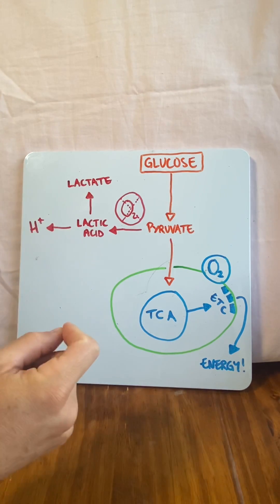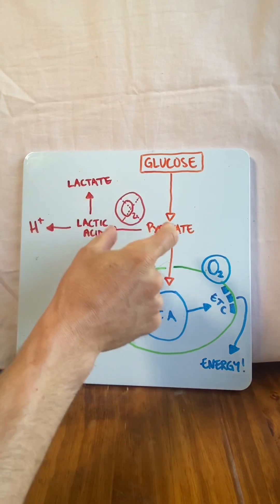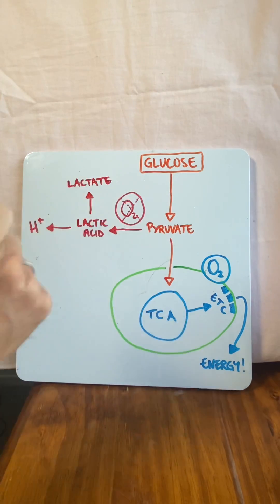Now here's the thing - evidence is now showing that lactate doesn't actually sit here in this process. Lactate should be moved to glycolysis, and instead of pyruvate being the end product of glycolysis, lactate should be.